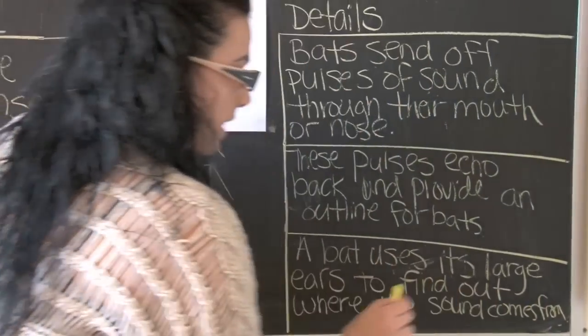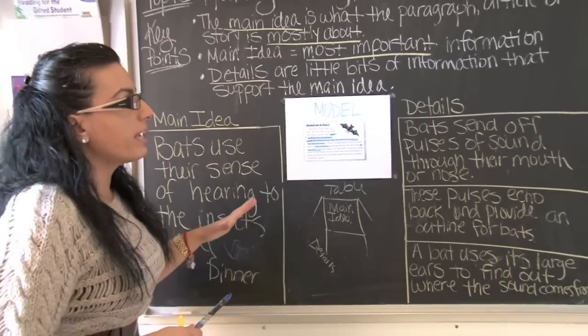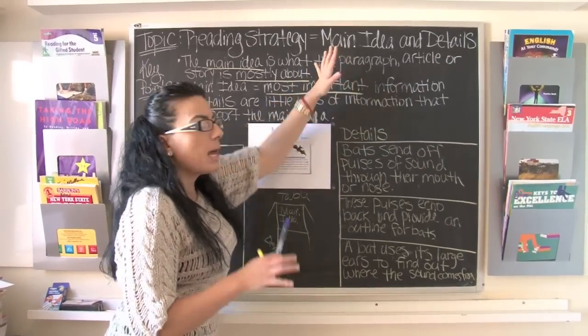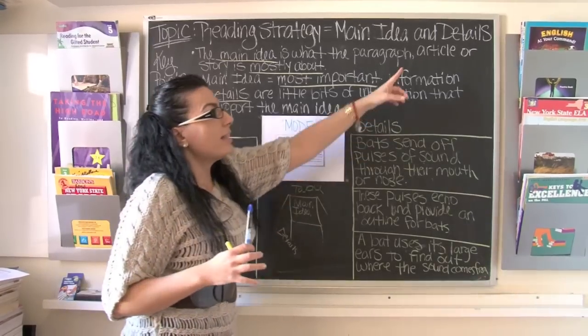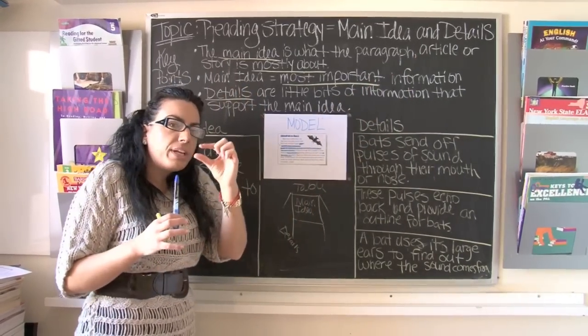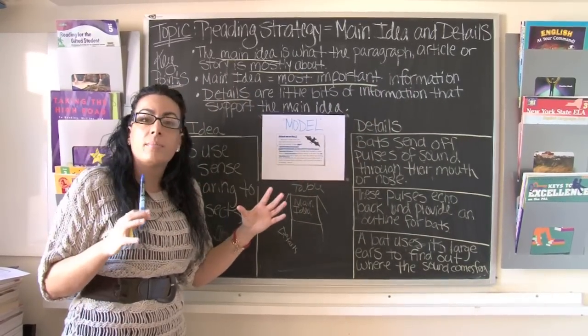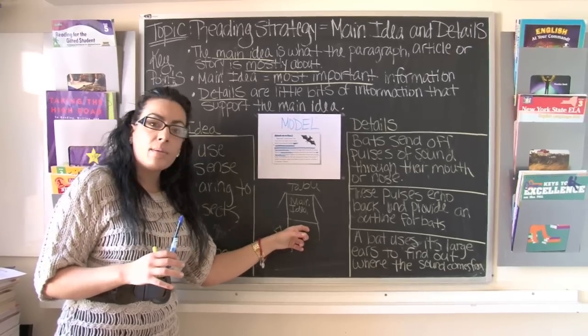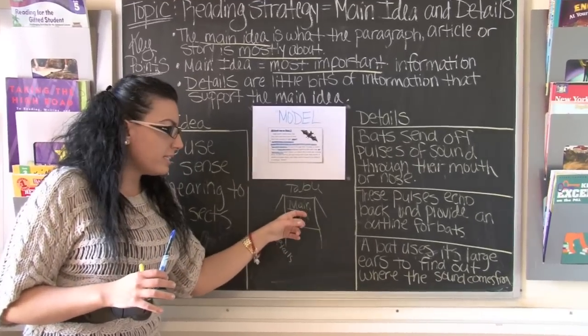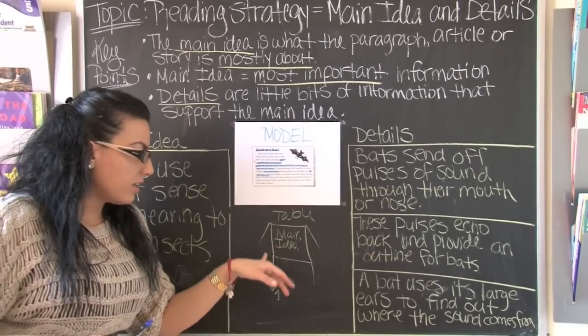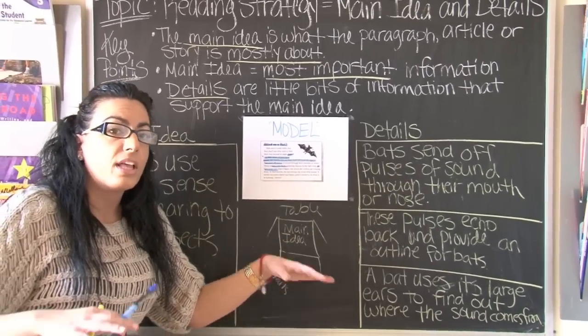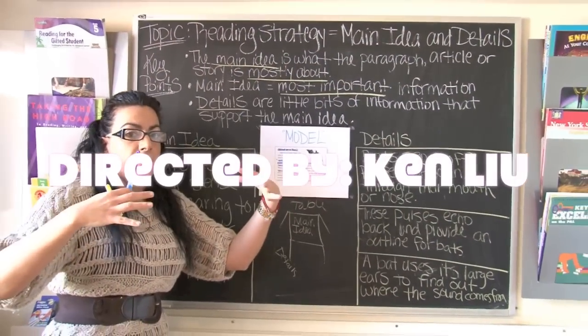I hope you can see that down there. So just to recap, remember, when we're talking about main idea, main idea is the most important information. And the details are the little bits of information that support the main idea. Remember, think about the table. The main idea is the part of the table that has it on top and supports it. And the little details are the little legs of the table that support the main idea.